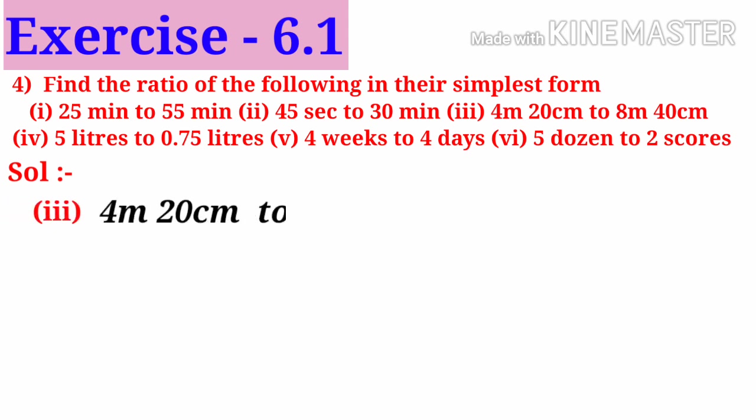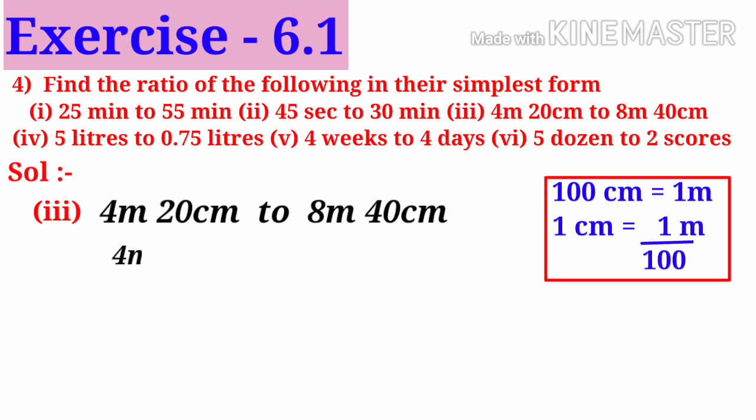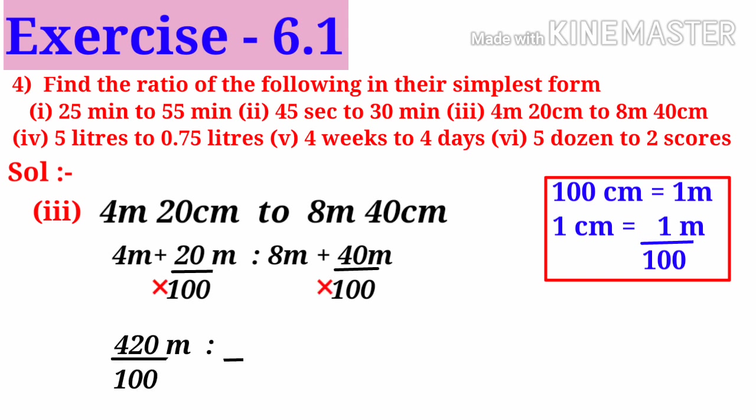Number 3: 4 meters 20 centimeters to 8 meters 40 centimeters. We know that 100 centimeters makes 1 meter. So it can be written as 4 plus 20/100 meters to 8 plus 40/100 meters. Converting to improper fraction: 4 into 100 is 400 plus 20 equals 420/100 meters to 800 plus 40 equals 840/100 meters. On simplification, hundreds get cancelled, giving 42 to 84. Dividing by 42, the ratio is 1 is to 2.